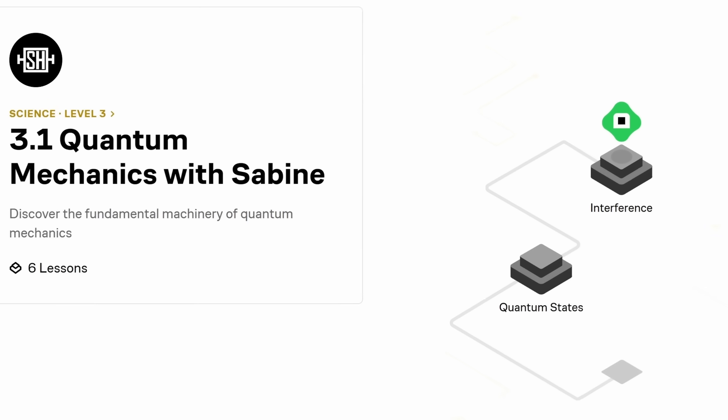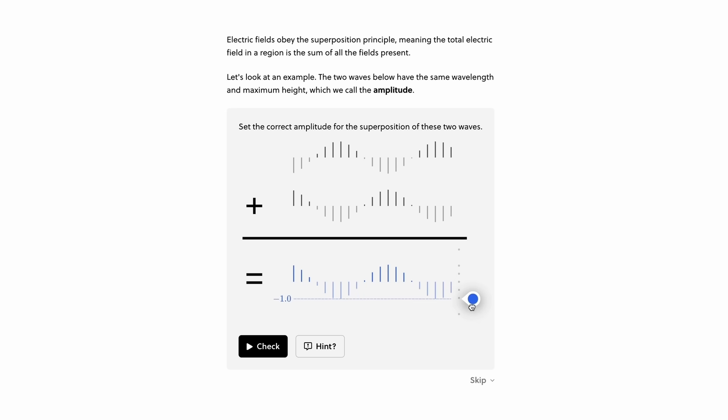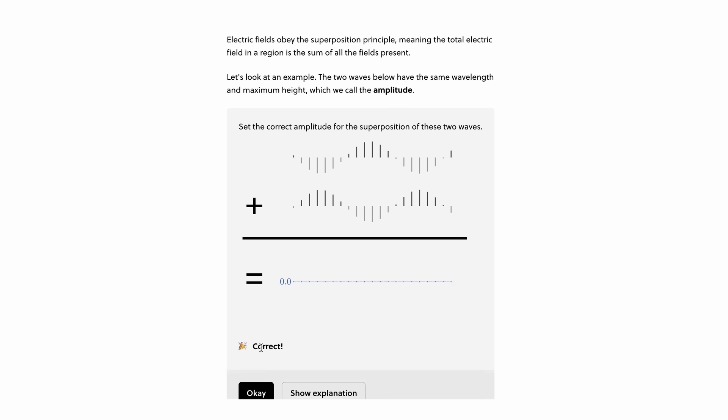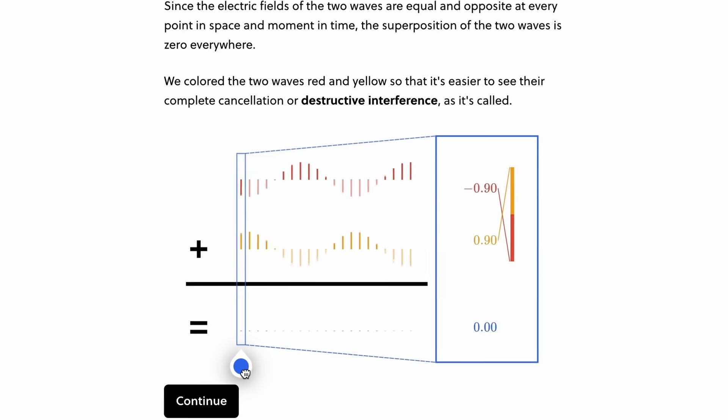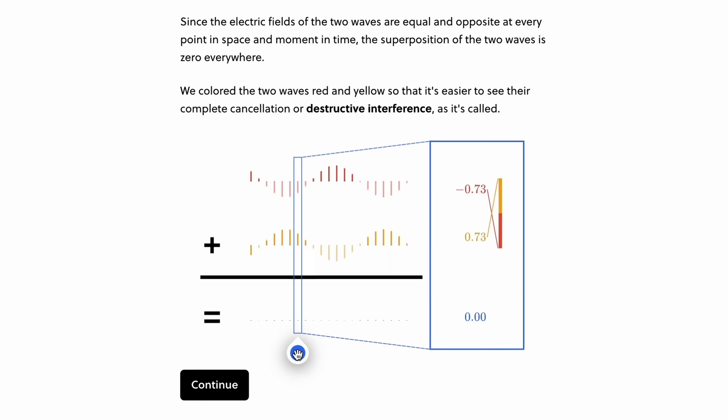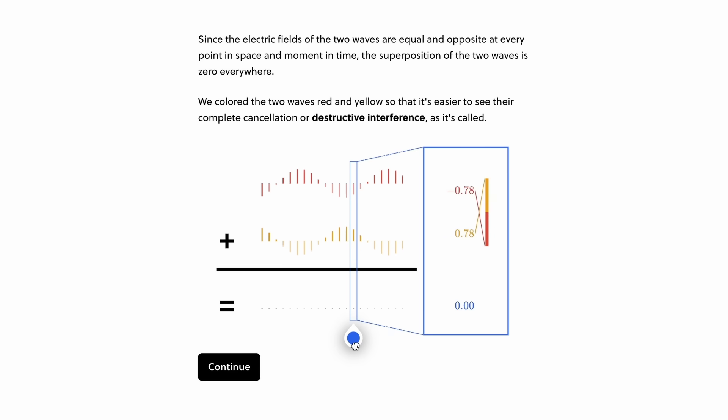I even have my own course on Brilliant. That's an introduction to quantum mechanics. It'll help you understand what a wave function is and what the difference is between superpositions and entanglement. It also covers interference, the uncertainty principle, and Bell's theorem. And after that, you can continue maybe with their course on quantum computing or differential equations.